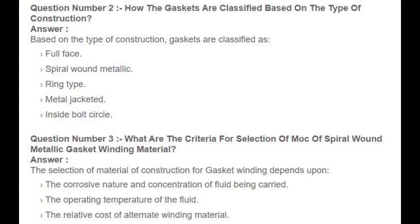Question number 3: What are the criteria for selection of material of spiral wound metallic gasket winding material? Answer: The selection of material of construction for gasket winding depends upon the corrosive nature and concentration of fluid being carried, the operating temperature of the fluid, and the relative cost of alternate winding material.